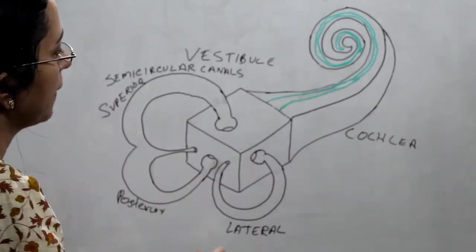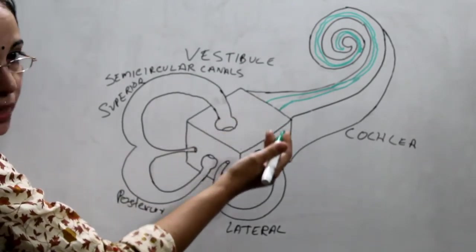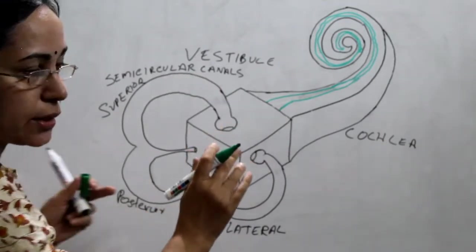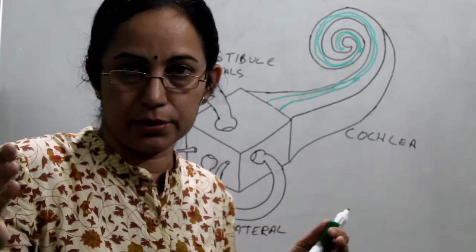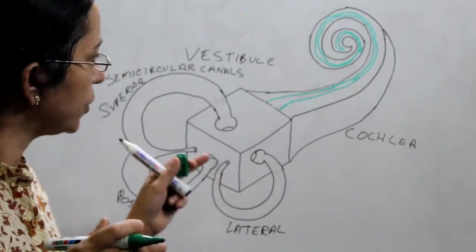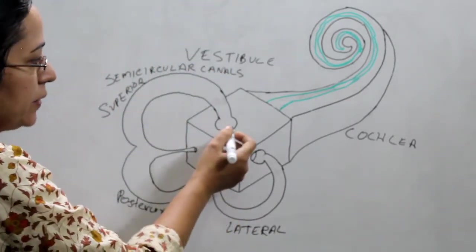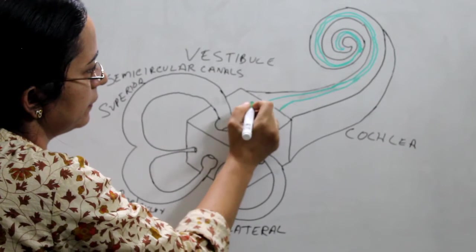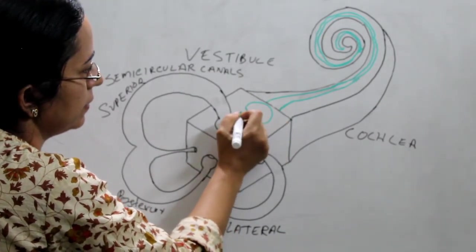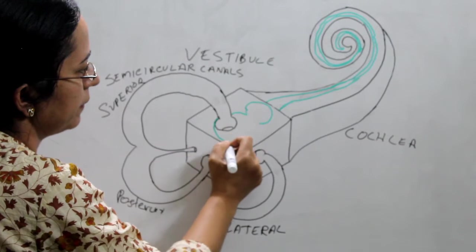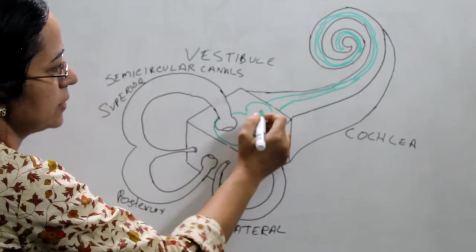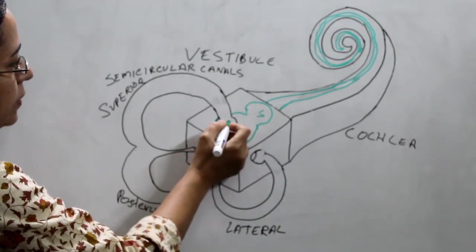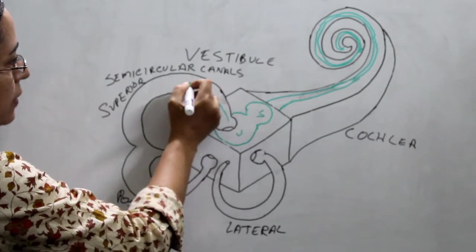The cochlear duct is the membranous structure here. What comes anteriorly is the saccule, and posteriorly is the utricle. Utricle — as a memory aid, the uterus has tubes, so utricle communicates with the semicircular ducts. Anteriorly is the saccule and posteriorly is the utricle, and here are the semicircular ducts.